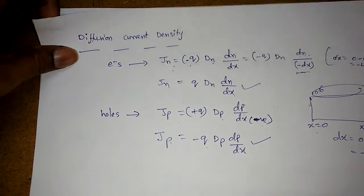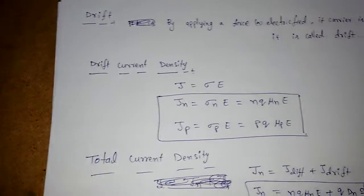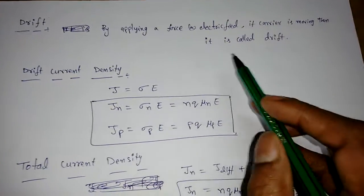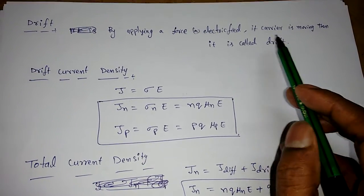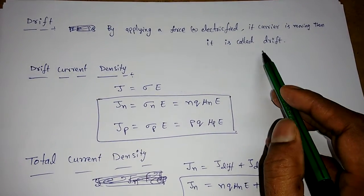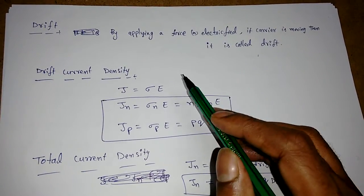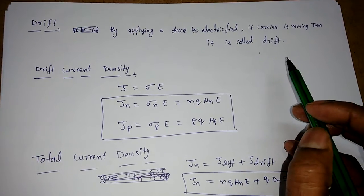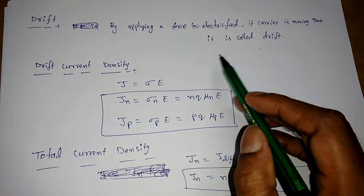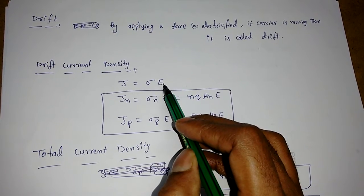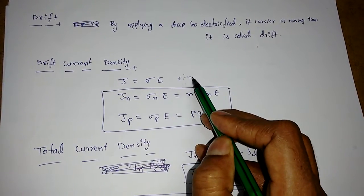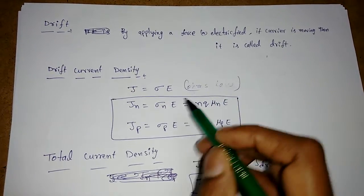The next topic is drift. Drift means carriers moving due to an applied external force — specifically an electric field E. Whenever carriers move due to an electric field, a drift current is developed. The drift current density is J = σ × E, which is directly proportional to the electric field — similar to Ohm's law — where σ is the conductivity.